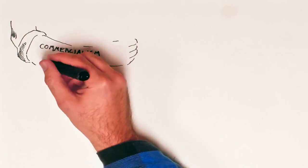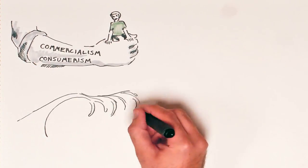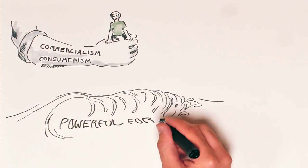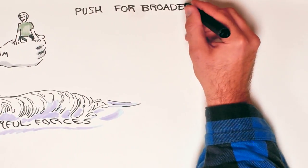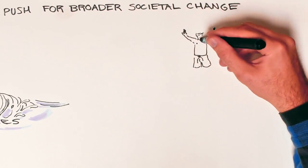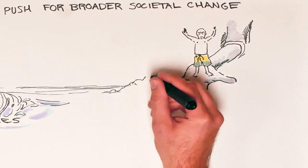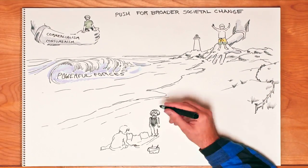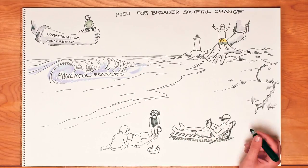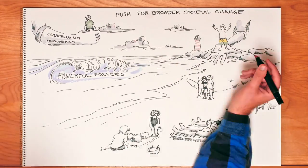The grip that consumerism and commercialism have on our world can seem inescapable, and there are certainly powerful forces that push materialistic values on us. But by making changes in our personal lives and by working for broader societal changes, we can break the hold of materialism and be freer to live our intrinsic values. That, in turn, would help us to take important steps toward greater personal well-being, a more humane society, and a more sustainable world.